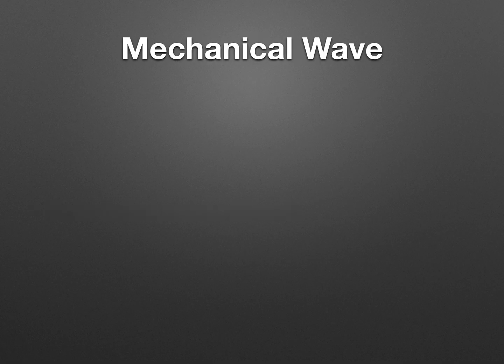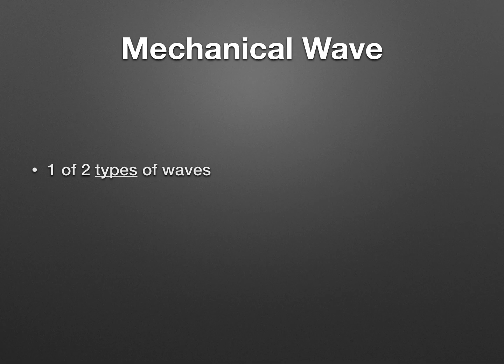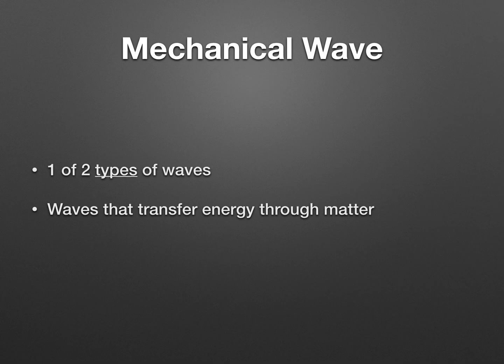The next word is mechanical wave. This one has several bullets, so don't just put the first one. Mechanical waves is one of two types of waves — either a wave is mechanical or it's EM. These waves transfer energy through matter. If it's going through matter and needs matter, it's a mechanical wave.